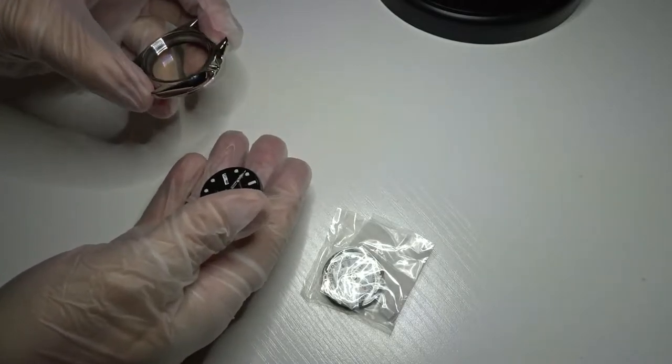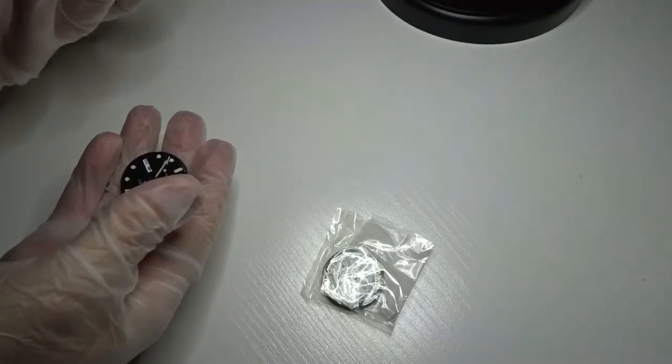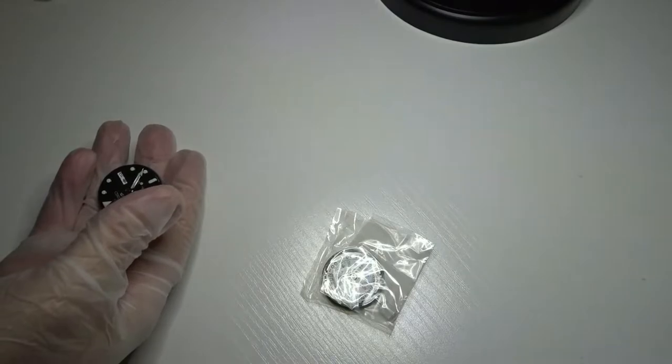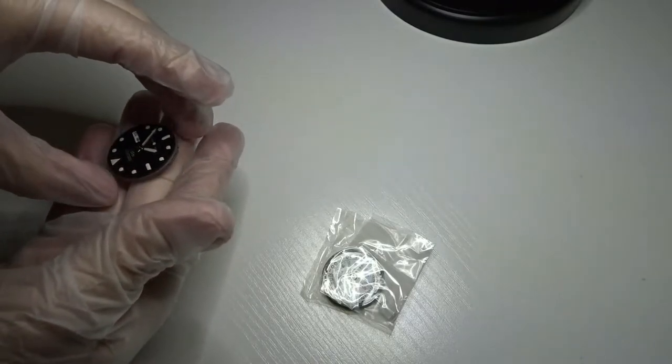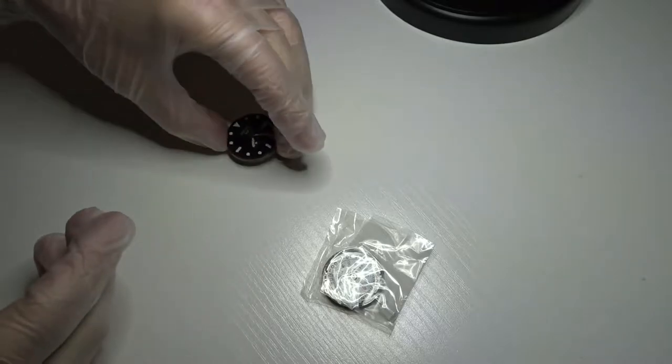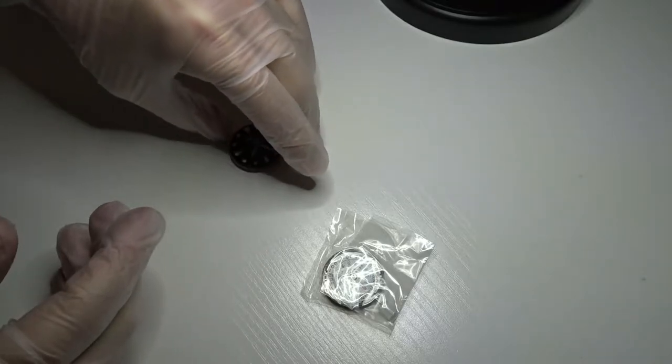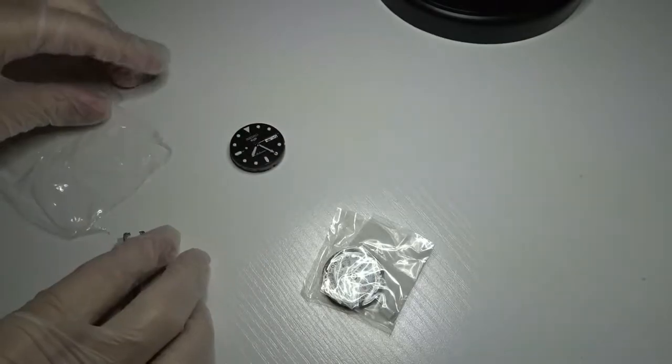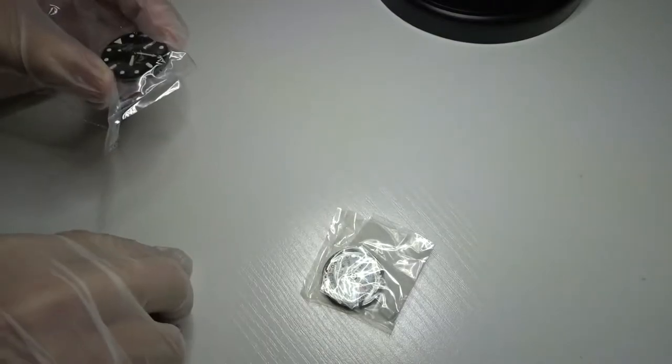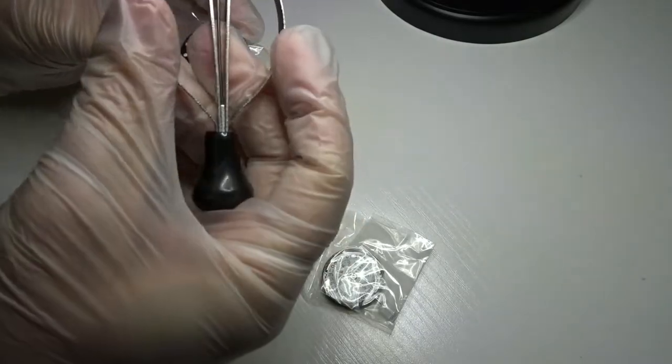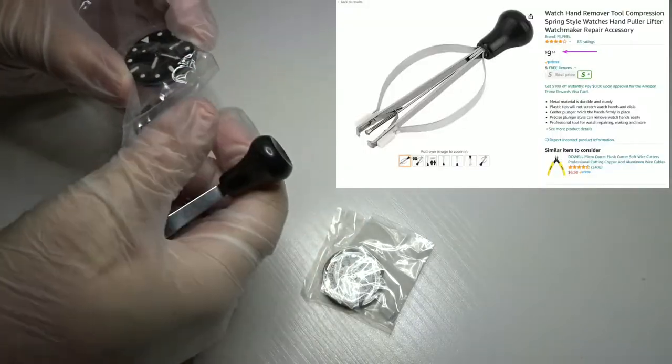So once the movement's out, basically set the case off to the side because I don't want it to pick up dust on the underside of the crystal. So what I'm going to do here is put a piece of plastic on the dial and this is a hand removal tool that I got a while back, I think from Amazon. It doesn't cost that much.